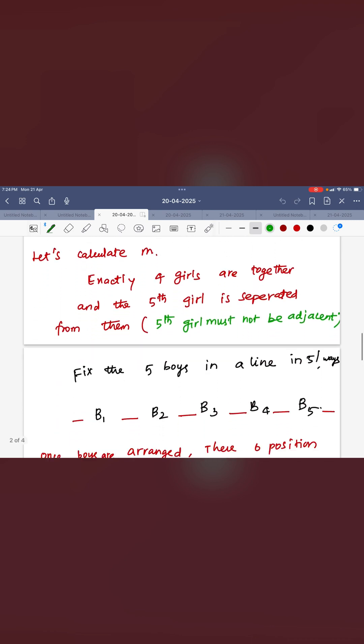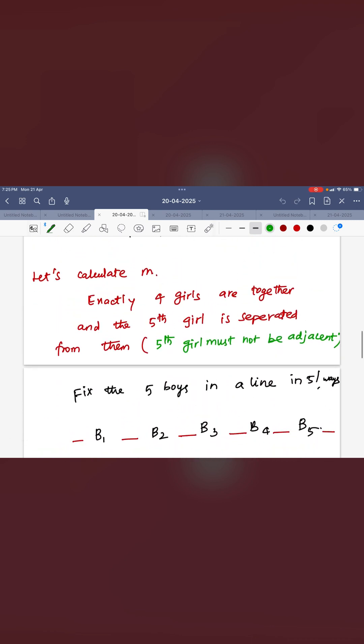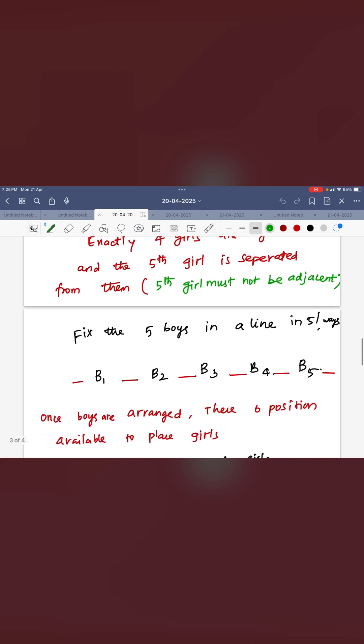Then how to find the value of M? So here exactly 4 girls are together and 5th girl is separated from them. That means 5th girl must not be adjacent. So you have to fill it alternate positions.